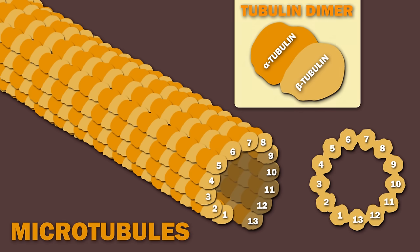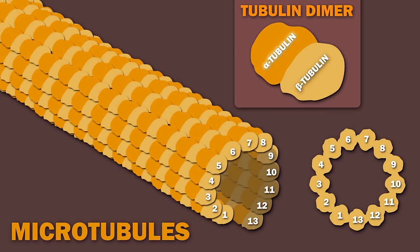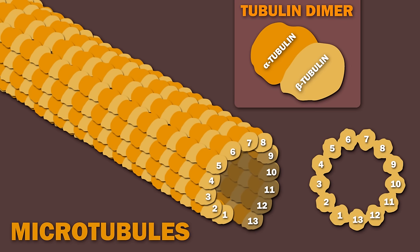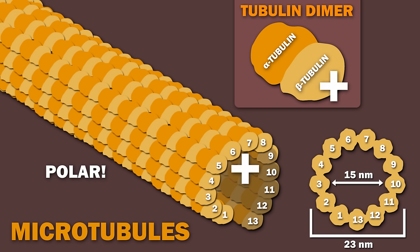Microtubules are hollow tubes composed of tubulin dimers, which are made of two globular proteins: alpha and beta tubulin. These heterodimers spontaneously bind together, forming a protofilament. 13 such protofilaments arrange together into a cylinder, forming a microtubule. A microtubule is 23 nanometers in outer diameter and 15 nanometers in inner diameter. While microfilaments have some bend to them, microtubules are much more rigid — hence, they are long and straight. Microtubules are polar molecules: the positively charged end, with beta subunits exposed, grows relatively quickly, while the negatively charged end, with alpha subunits exposed, grows relatively slowly.